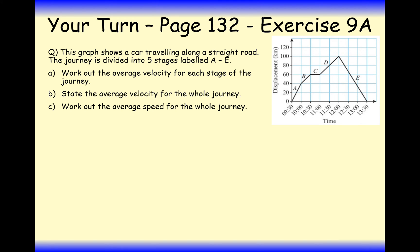So your turn to have a go at this question. Pause the video and have a go. This graph shows a car traveling along a straight road. The journey is divided into five stages, A to E. Work out the average velocity for each stage of the journey. A here is going to be displacement of 40 divided by half, because it only went for half an hour. So it's 40 divided by one half, which is 80.